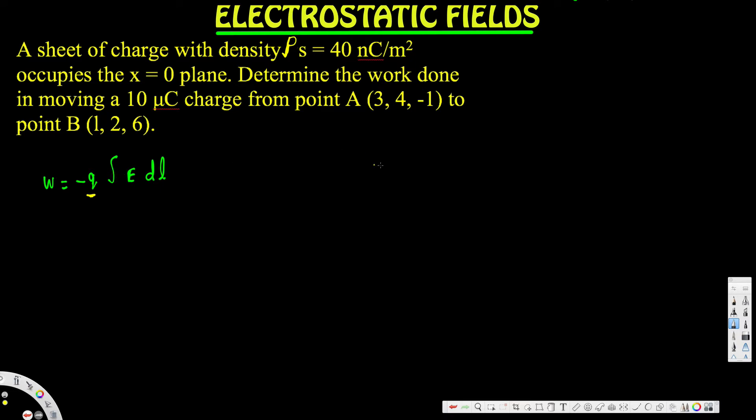To find the electric field, we use this equation: E = ρs/(2ε₀)·aₙ. ρs is provided as the sheet charge density. ε₀ is available as a constant. aₙ is the direction. Since it's occurring at the x = 0 plane, aₙ is equal to positive ax.